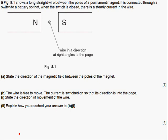State the direction of the magnetic field between the poles of the magnet. So we've got a wire with a current flowing through it going directly into the page. I know it's going directly into the page because it's got a cross in it like that. If it was coming out of the page, it would look like a dot. State the direction of the magnetic field between the poles of the magnet. From north to south.